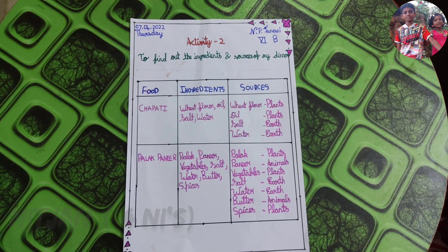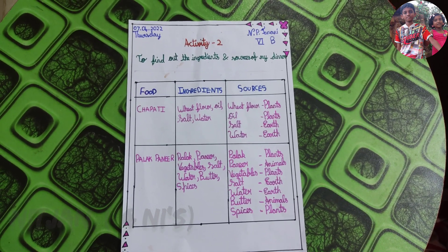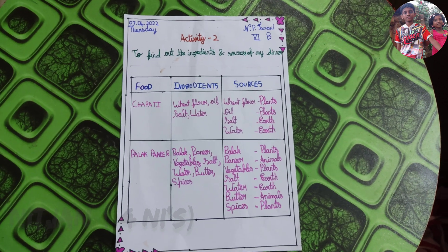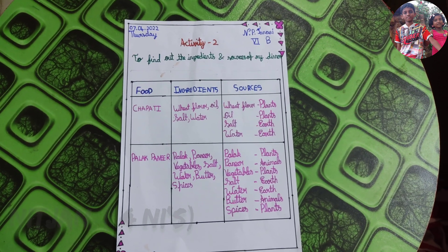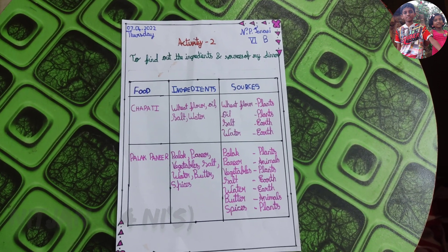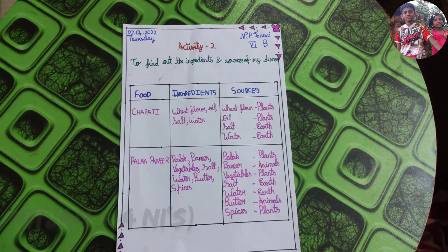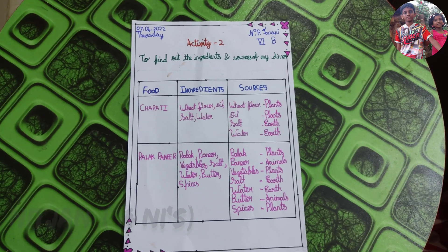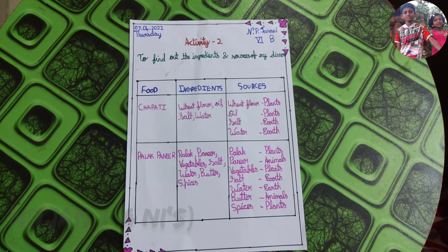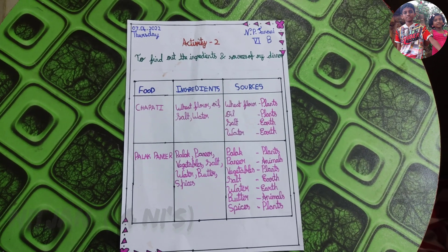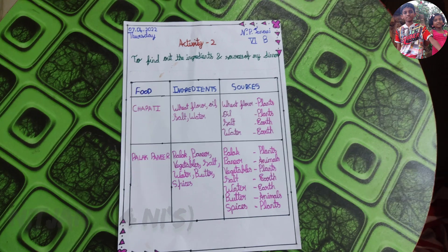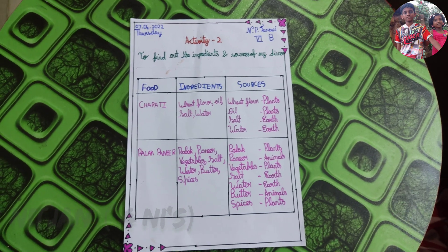Chapati: wheat flour, oil, salt, water. Wheat flour from plants, oil from plants, salt from earth, water from earth.